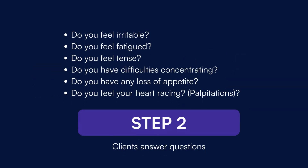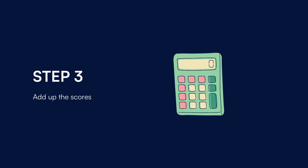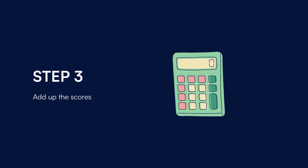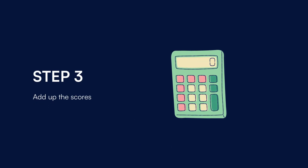Here are some of the questions that need to be answered: Do you feel irritable? Do you feel fatigued? Do you feel tense? Do you have difficulties concentrating? Do you have any loss of appetite? Do you feel your heart racing? After the scale has been accomplished, you just need to add up the scores from items 1 to 20. The minimum score is 0 and the maximum is 80. The last two items are not scored but they provide additional information regarding the benzodiazepine withdrawal.